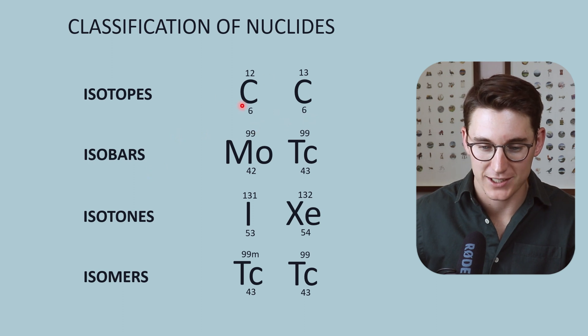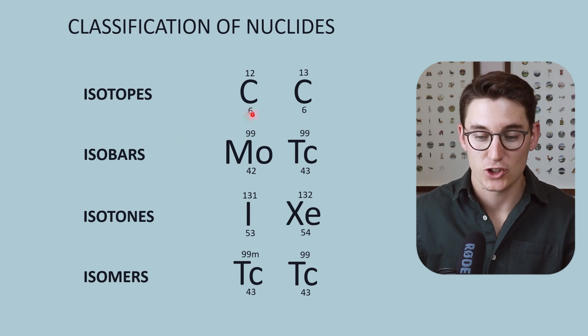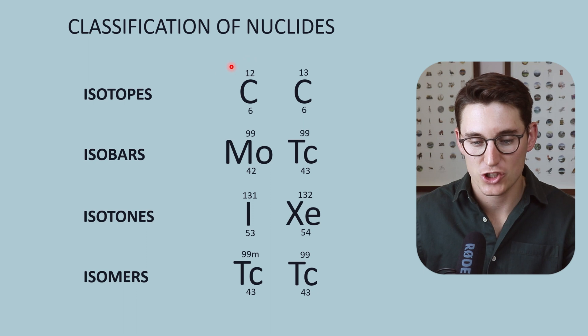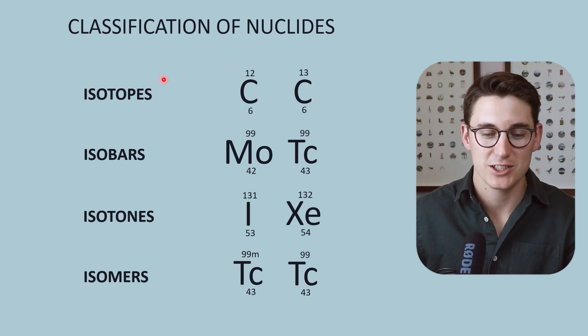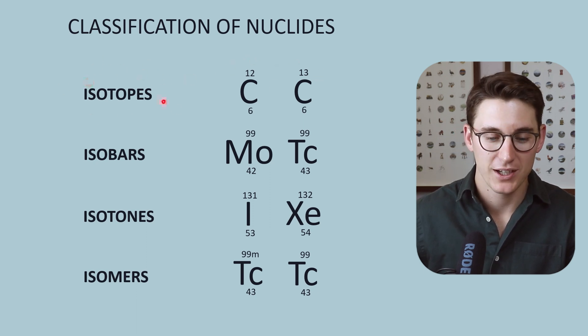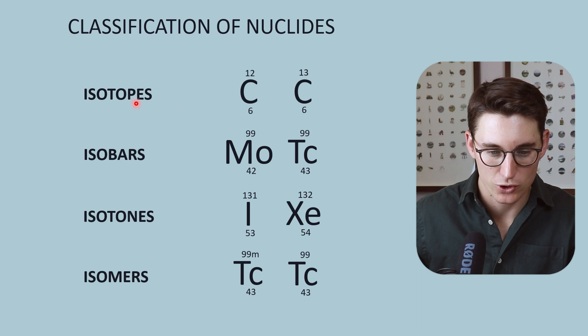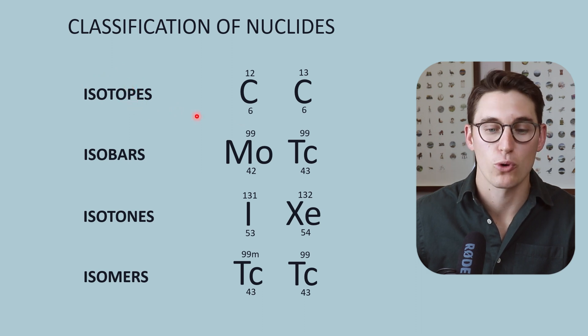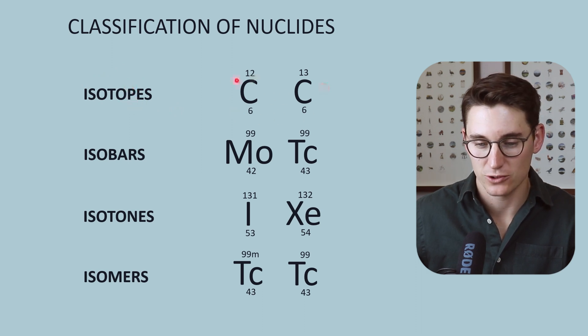As I've mentioned, carbon has six protons—its atomic number is six. But we can change the number of neutrons, and that is what's known as an isotope. The easy way to remember this is isotope has a P here. The protons remain the same, still called carbon.